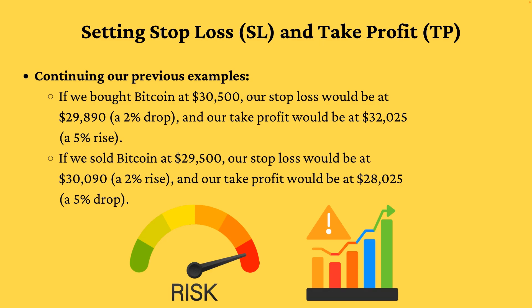If we sold Bitcoin at $29,500, our stop loss would be at $30,090 — a 2% rise — and our take profit would be at $28,025 — a 5% drop.